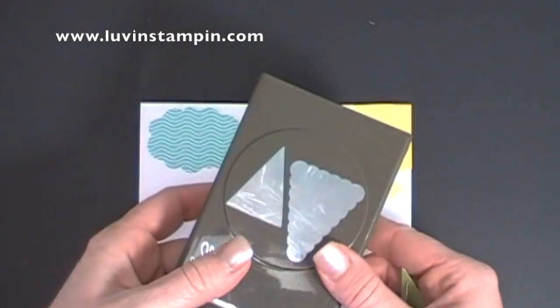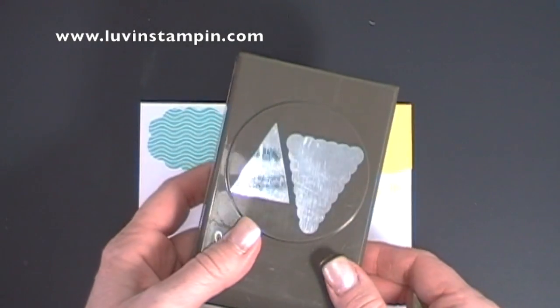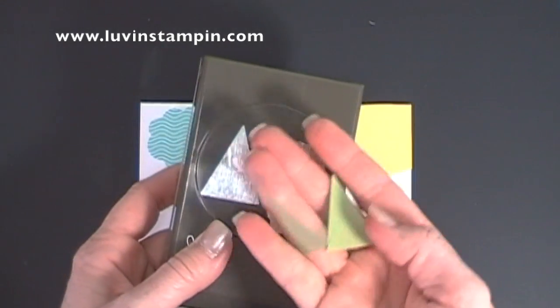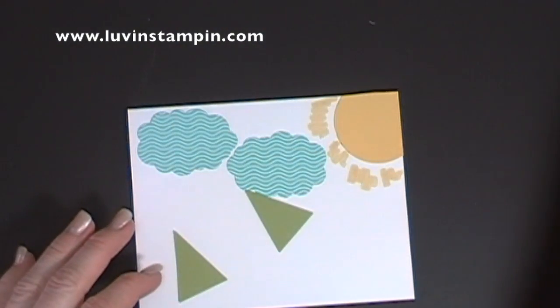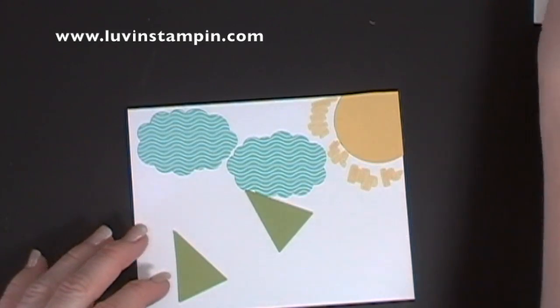All right, and then I used the Petite Pennant Builder Punch. I think that's what it's called, and I'm using the triangles from this, and I'm going to do dimensionals on each of them. These are my trees.